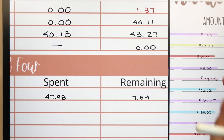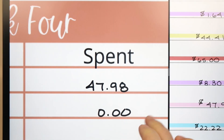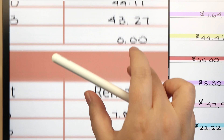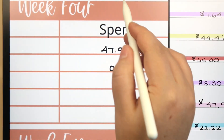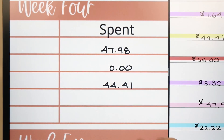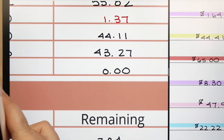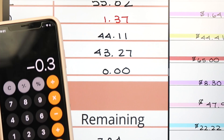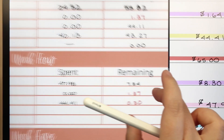For household, we did not have any transactions, so we'll put zero. Last week we were $137 over. For gas, we filled up once for $44.41. We've been filling up a little bit more because Andrew's been doing DoorDash. We had $44.11 remaining last week, so we're negative 30 cents now. I don't think we're going to need to fill up before June, so I think we'll be okay.